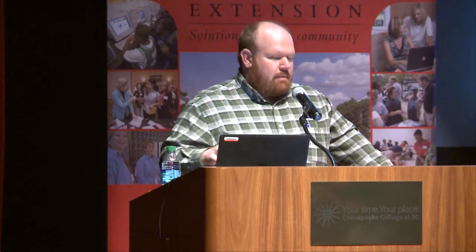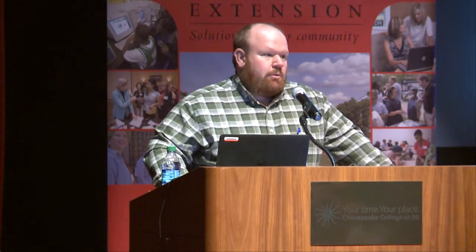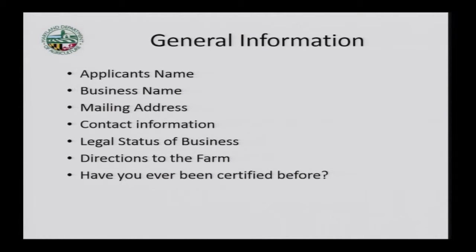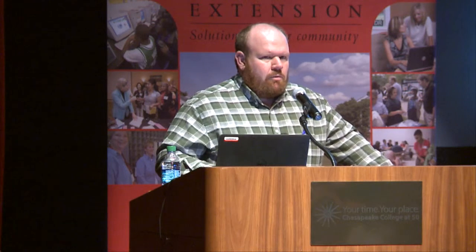The general information section includes your name, whoever's filling out the application, the farm name, the owner's name, mailing address, contact information, phone number, cell phone, fax, email address, and the legal status of the business — whether it's a sole proprietorship, partnership, LLC, or corporation. This is mainly because we have to verify there are no conflicts of interest in our office, so we ask about the legal status and who the members are.